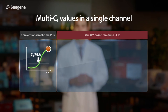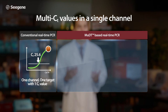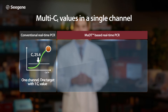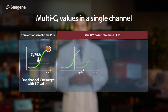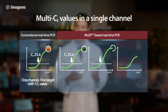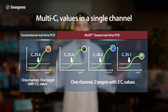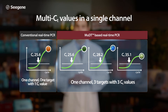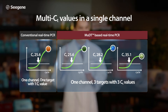MUDT breaks through the one-channel, one-CT-value limitation. Now, with MUDT, multiple targets having different CT values can be detected in a single fluorescence channel.